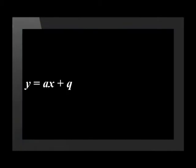Okay, so we have seen that a in the formula is the gradient, right? So what's q in the formula? Does it also tell us something about the graph? Well, let's find out.